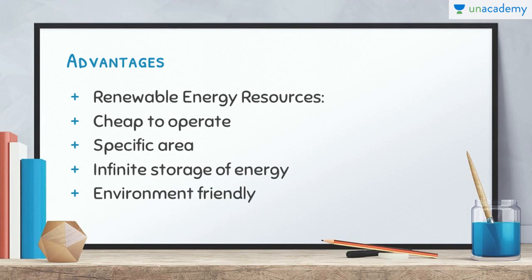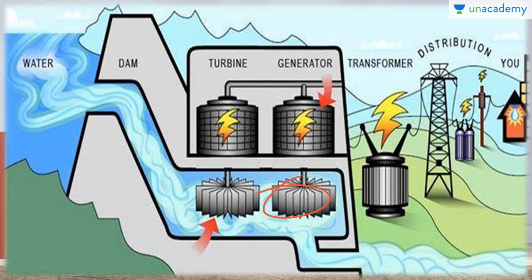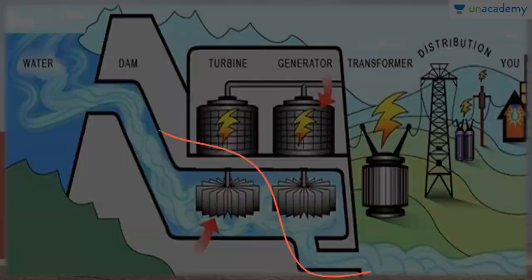So what are the advantages of renewable energy resources? They are very cheap to operate. They do not need a specific area — they can be built anywhere; you can even see solar panels on rooftops of houses. They have an infinite storage of energy within them and they are very environment friendly. This image depicts a hydroelectric power plant — you can see the turbines and propellers here which rotate and produce power by the force of water.